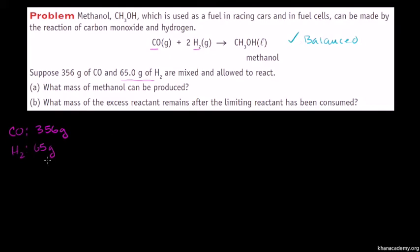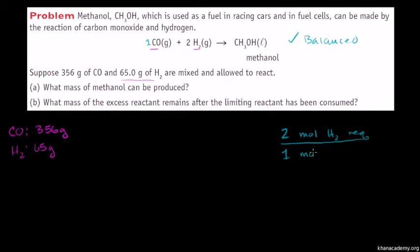So we can proceed to figure out what the limiting reactant is. The way we want to do it is figure out how many moles of each of these were given, and then figure out the stoichiometric ratio required by this reaction. We already know what it is: for every 2 moles of hydrogen required, we require 1 mole of carbon monoxide. This is what the equation tells us.